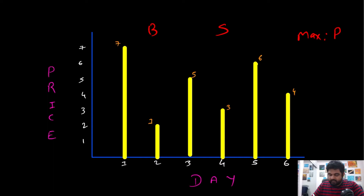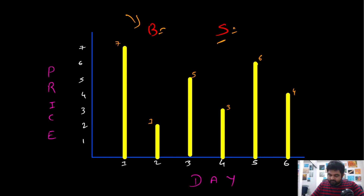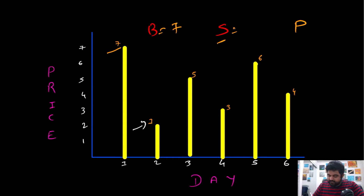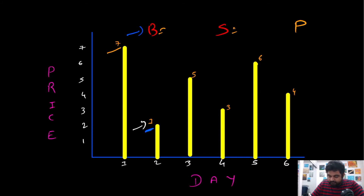We'll use a variable called 'buy' to track the minimum price seen so far, along with 'sell' and 'profit' variables. Starting at position 7, we can't sell yet. On day two the price falls to 1, which is lower than 7, so we update our buy price from 7 to 1. We don't sell anything at this point.